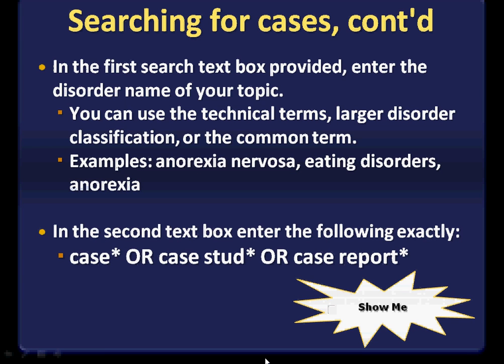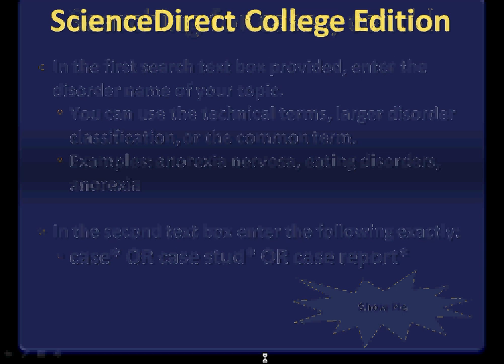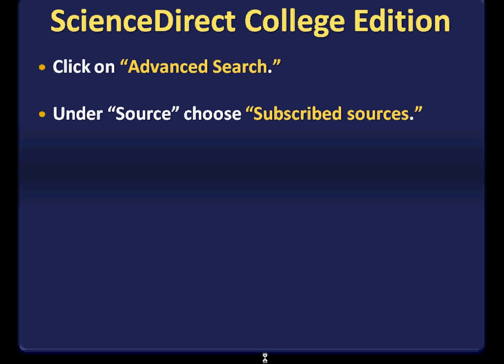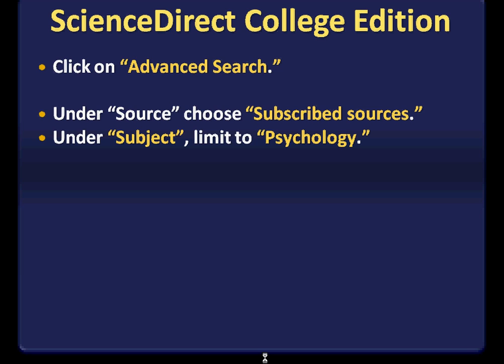A final database added to this tutorial is Science Direct College Edition. It primarily has scientific titles, but there are some psychology journals in the collection. When you go to the Science Direct search screen, click on Advanced Search. Under Source, choose Subscribed Sources, and under Subject, limit to Psychology. Then type in your search terms, much like in the other databases.